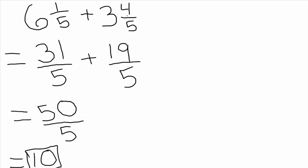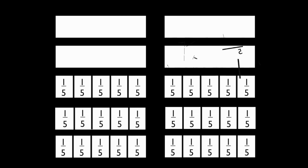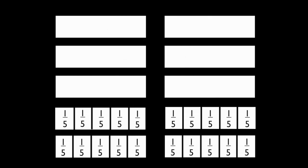Why divide fifty by five? When you simplify fifty-fifths, you are finding how many fifths are in fifty. One can be expressed as five-fifths. Two is equivalent to ten-fifths. Three could be rewritten as fifteen-fifths and so on. Therefore, ten is equivalent to fifty-fifths.